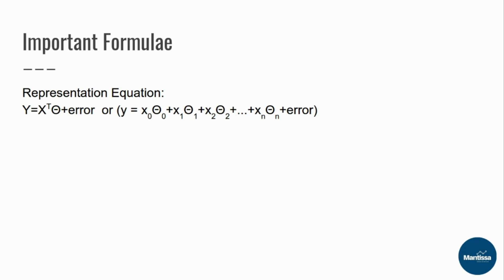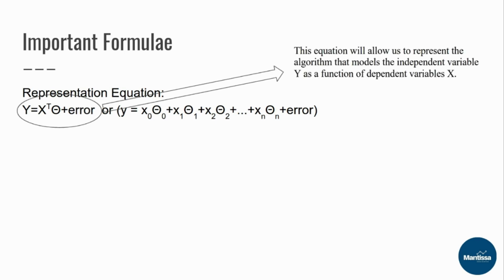Here y is the dependent variable. x is a vector of independent variables, and we write x-transpose when we are taking the product of a row vector with the parameters theta in linear algebra. So x-transpose times theta, when expanded, gives you the full sum. This equation allows us to represent the algorithm that models the dependent variable y as a function of the independent variables x.